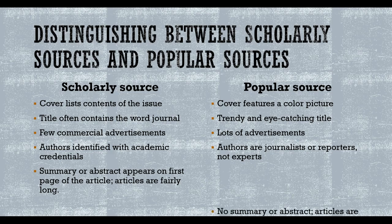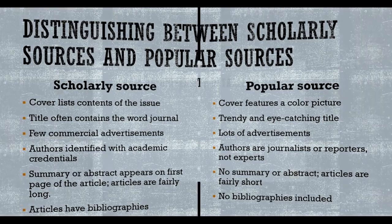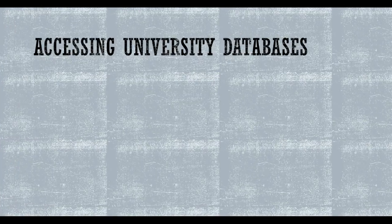Scholarly articles include a summary or abstract on the first page and are fairly long. Popular source articles are generally short and do not provide abstracts or summaries. Scholarly sources always cite their sources and provide bibliographies, while popular sources do not provide bibliographies.